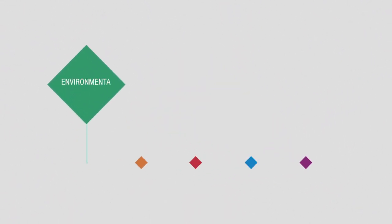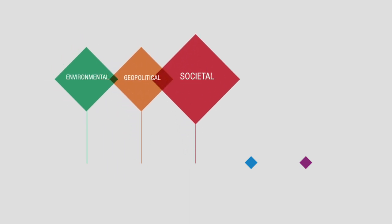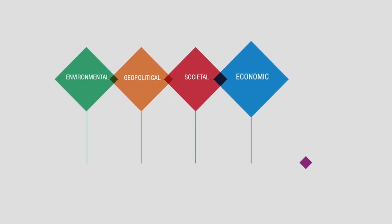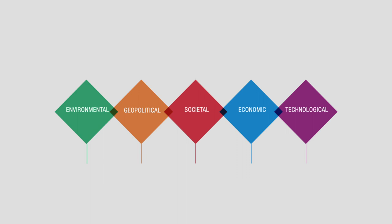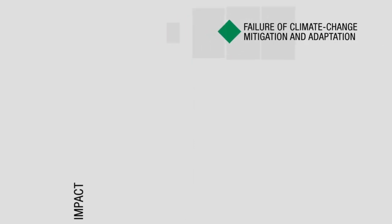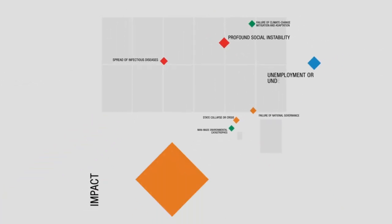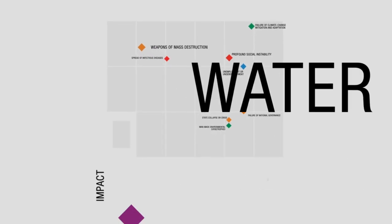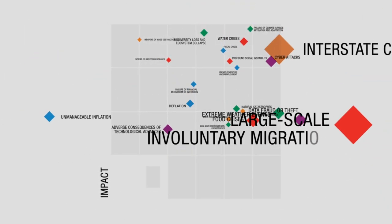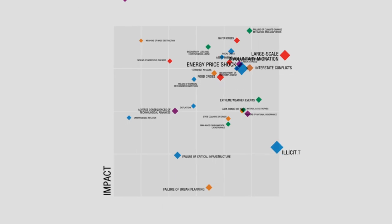For the first time ever, environmental, geopolitical, societal, and economic all feature among the top five most impactful risks. In terms of impact, the top risk is failure of climate change mitigation and adaptation. It is considered to have greater potential damage than weapons of mass destruction, water crisis, large-scale involuntary migration, and severe energy price shock.